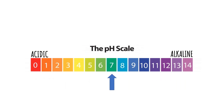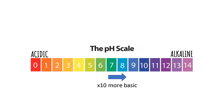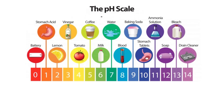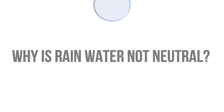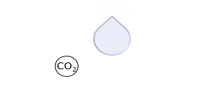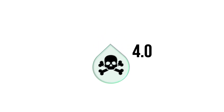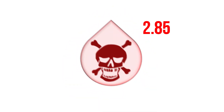Acid rain is measured using a pH scale which runs from 0 to 14, where 7 is neutral. Each change in number on the scale represents a tenfold change in the acidity or alkalinity of the water. Normal drinking water has a pH value of 7, while normal clean rain has a value of between 5.3 and 5.6. The difference between 5.6 and 7.0 is due to carbon dioxide dissolving into the rain. Typical acid rain has a pH value of 4.0, and the worst recorded acid rain was a whopping 2.85.